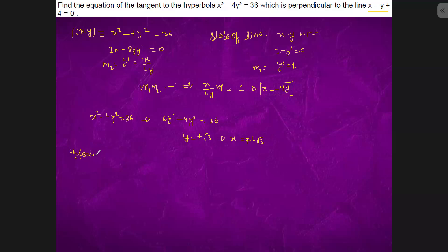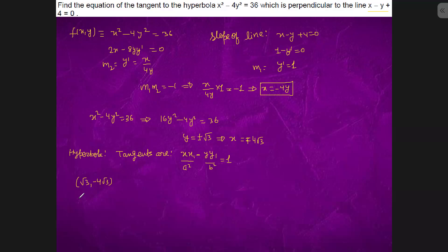The equation of the tangent to the hyperbola is of the form xx₁/a² - yy₁/b² = 1. The standard form of the hyperbola is x²/36 - y²/9 = 1, so a² = 36 and b² = 9. We have two points: first point (-4√3, √3) and second point (4√3, -√3).